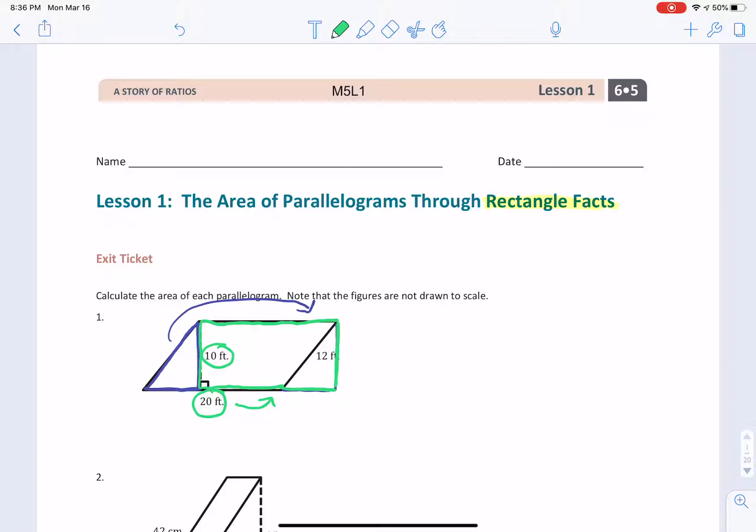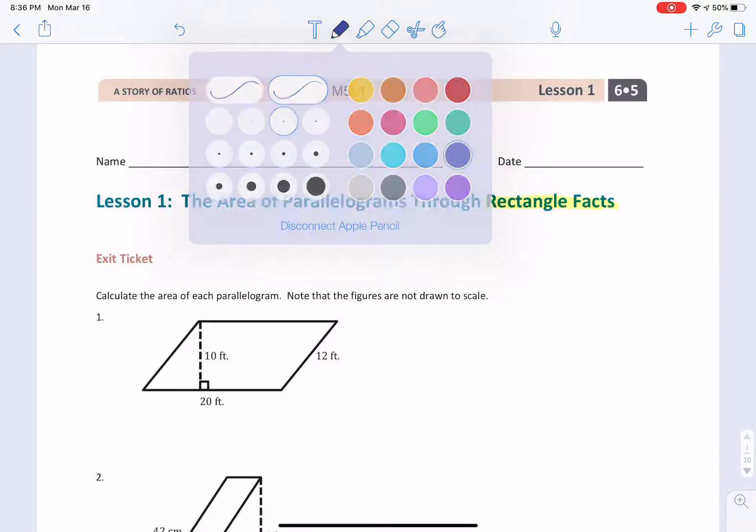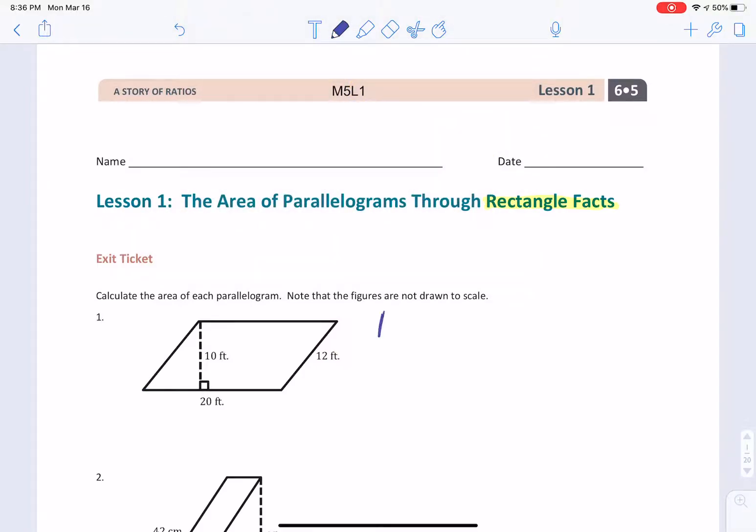We would call it the width if we were using the words length and width. So this parallelogram has all the same measurements of a rectangle. We know how to find the area of a rectangle, so we're going to simply use that formula. If you recall, the formula for the area of a rectangle is area equals length times width. Now, I don't want to use length and width anymore. I actually want to use base and height. It makes a lot more sense when we're talking about a parallelogram.